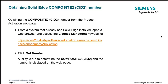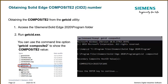Finally, you can access the same information using the getcid.exe executable, which is in the program folder under your Solid Edge installation directory. You just run it and it will return the Composite CID value. Or you can use a DOS window and run it in that environment with the command line — very flexible options.